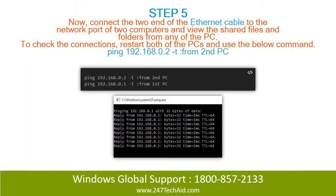Step 5. Now connect the two ends of the Ethernet cable to the network port of both computers, and view the shared files and folders from either PC. To check the connection, restart both PCs and use the command below.